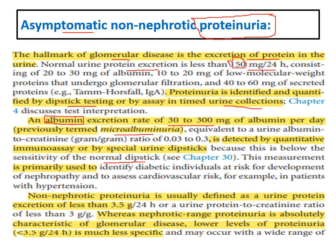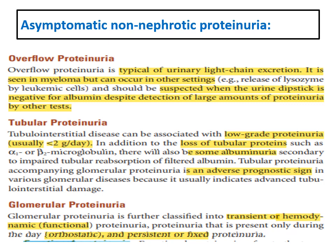If dipstick shows at least 1+ protein, this corresponds to more than 300 mg per day. Low-level albuminuria is detected by special urine testing such as albumin-to-creatinine ratio or 24-hour urine collection. Proteinuria more than 3.5 gram per day is termed nephrotic range proteinuria; less than 3.5 gram per day is non-nephrotic proteinuria. Nephrotic range proteinuria is mostly caused by glomerular diseases, while lower-range proteinuria may be glomerular, tubular, or from overflow.